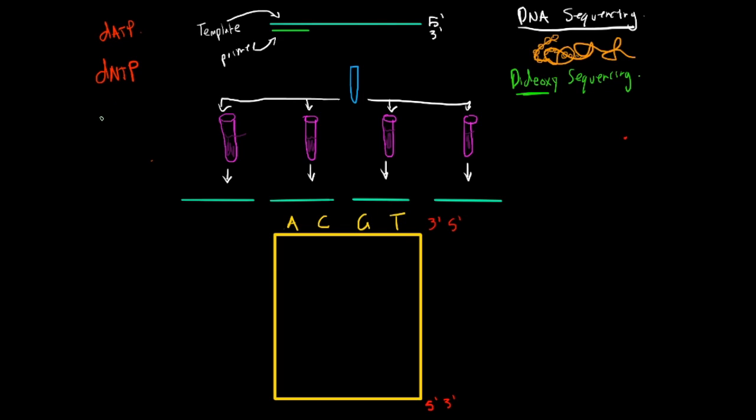So dideoxy is DDNTP, and it essentially terminates synthesis. And the reason being is because the molecular structure of it, if we draw that down here as well, looks like without the, we'll just do a little, this is your phosphate group right here, and then you have your sugar and your base right here. So normally, DNA has a hydrogen and a three-primed hydroxyl group.